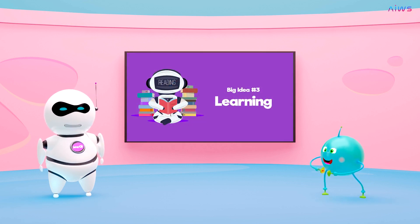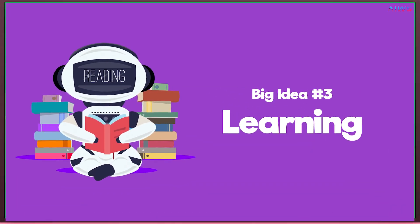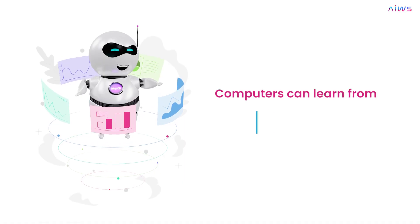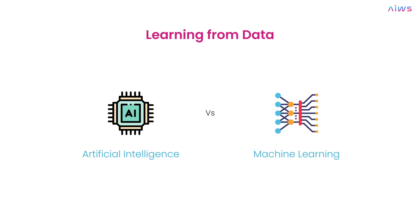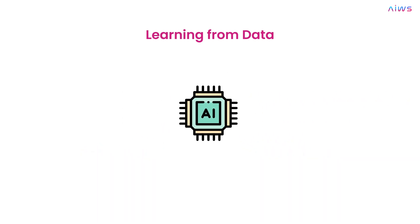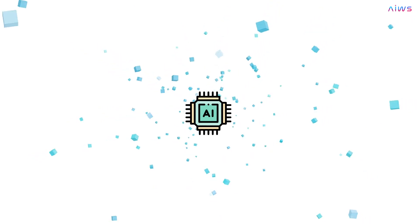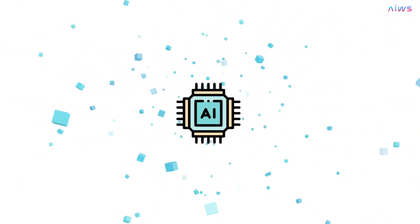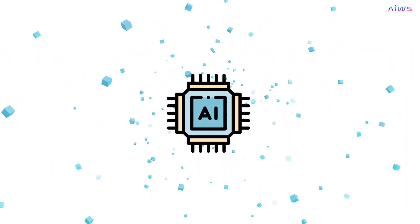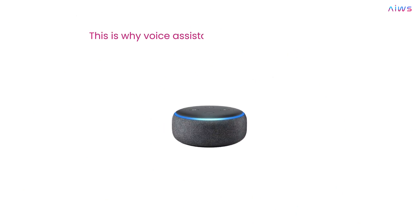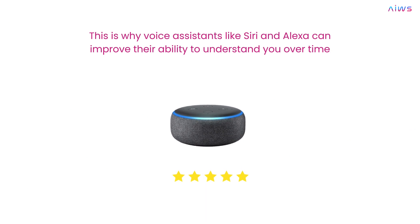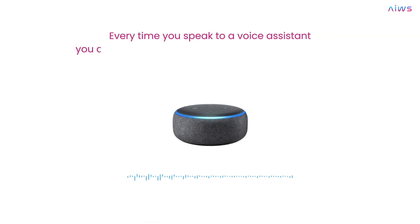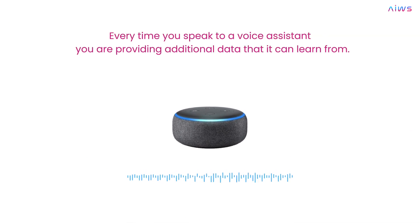The third big idea is learning. Computers can learn from data. This is one of the key ways in which AI and machine learning differ from traditional algorithms. As these systems operate, they continue to gather more data and learn from the new data that comes in. This is why voice assistants like Siri and Alexa can improve their ability to understand you over time — every time you speak to a voice assistant, you are providing additional data that it can learn from.